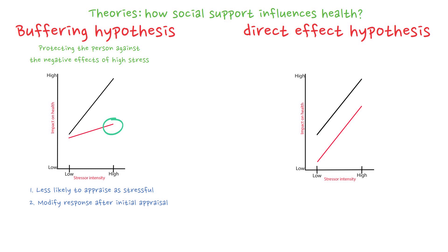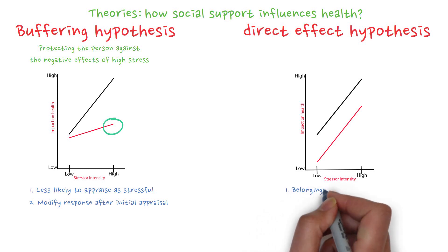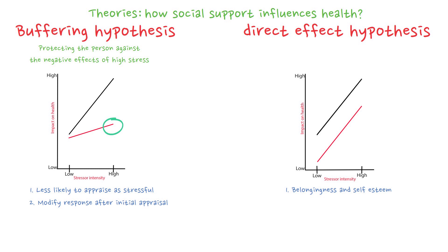Let's move on to the direct effect hypothesis. So how does it work? One way is that people with high levels of social support may have strong feelings of belongingness and self-esteem. The positive outlook it produces may be beneficial to health independently of stress.